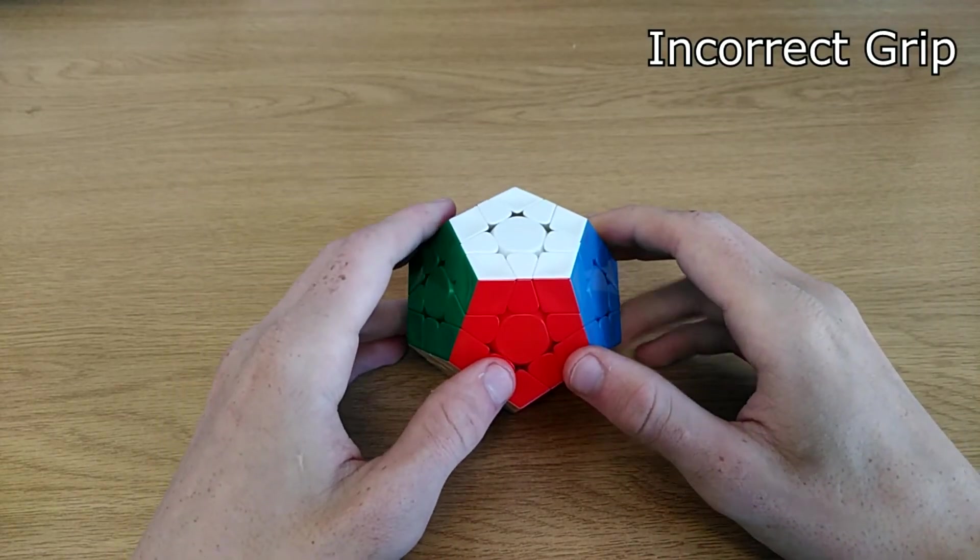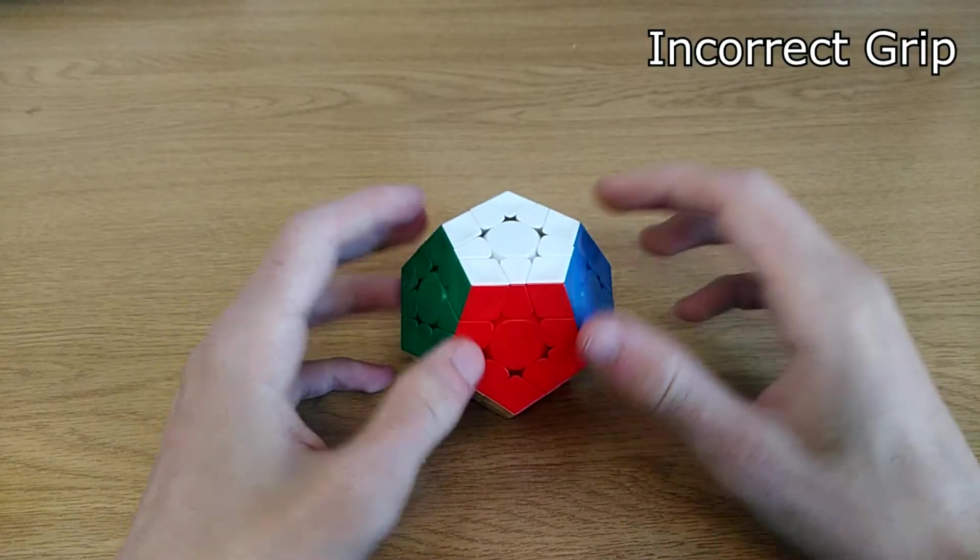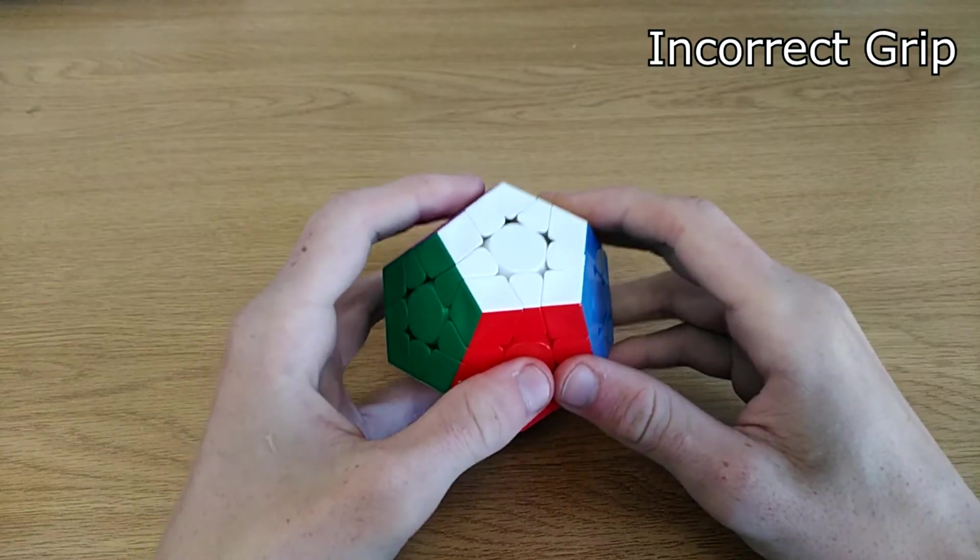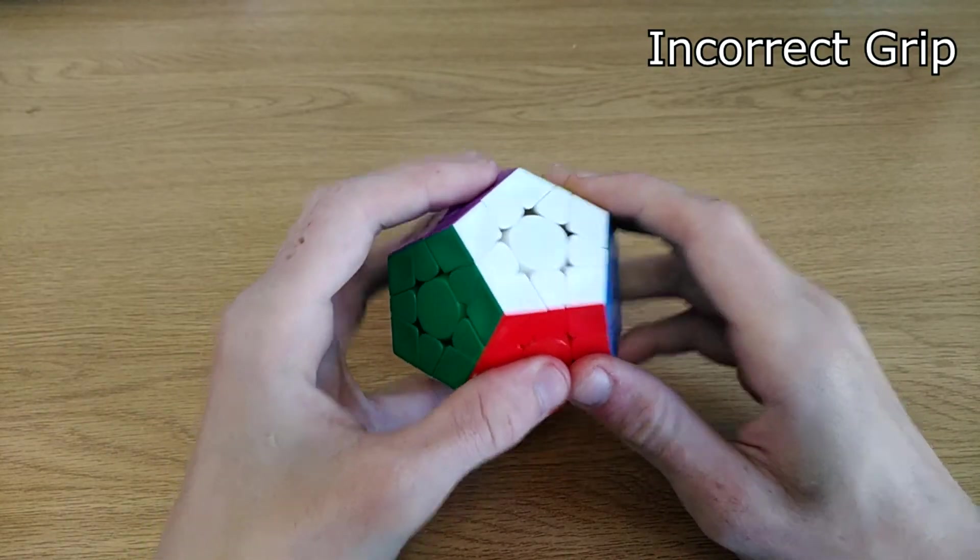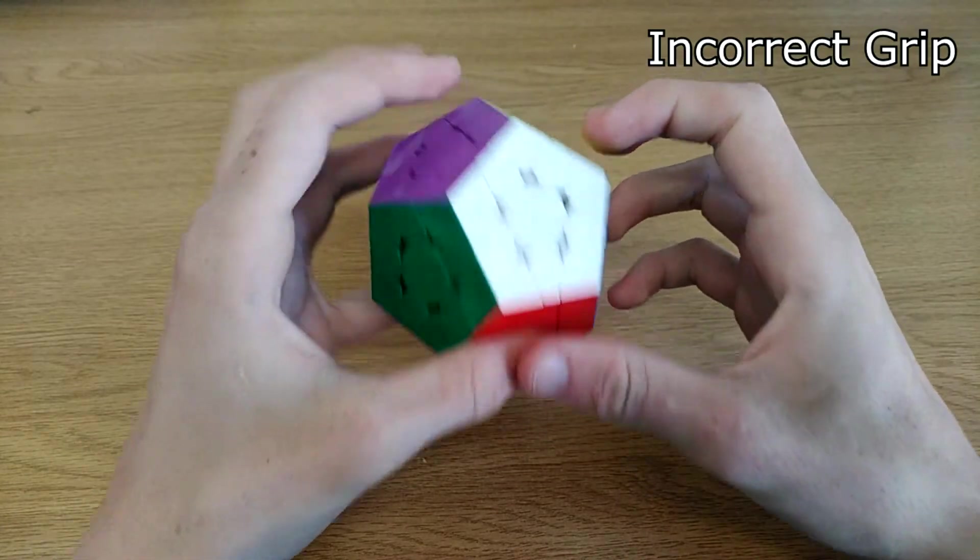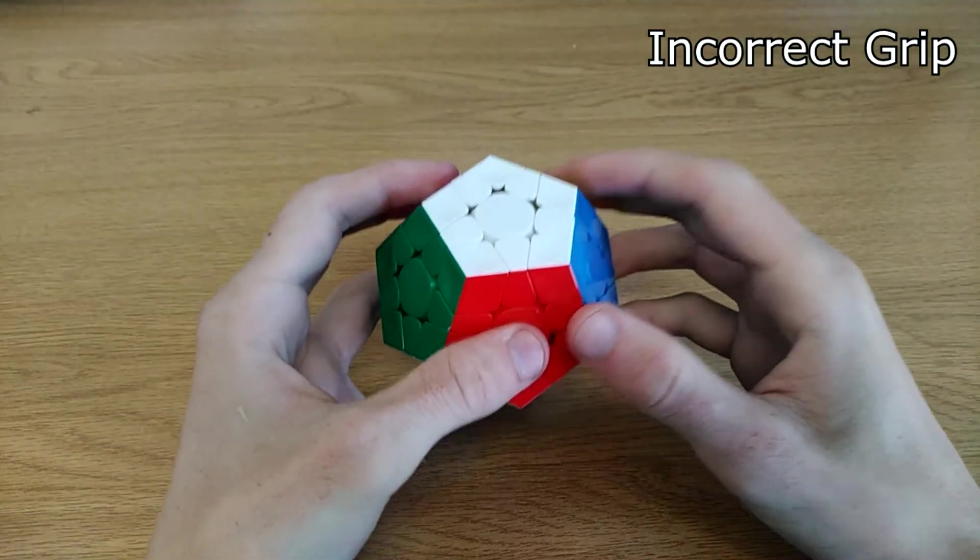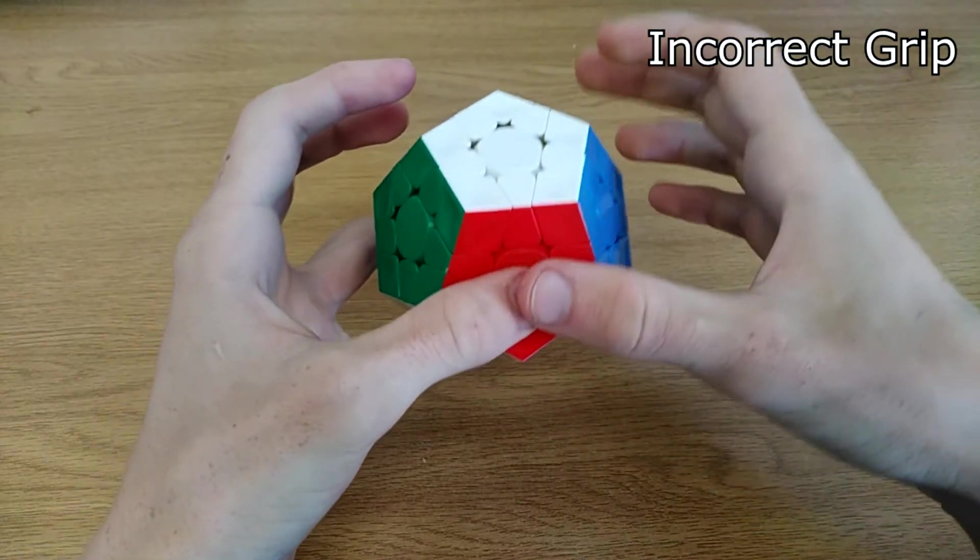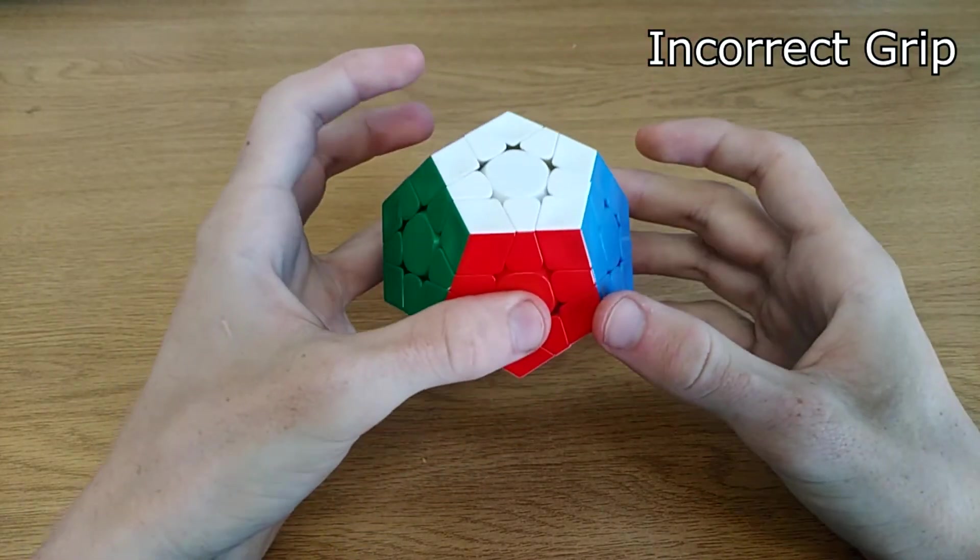Number 1: Incorrect grip. There are many different ways to grip a Megaminx because of the 12 sides, but there is only one correct way to grip it. You should always hold it with your pinky on the bottom, your thumb in the front and your ring finger in the back. This way the cube can rest on your pinky whilst your thumb and ring finger stabilize the cube.